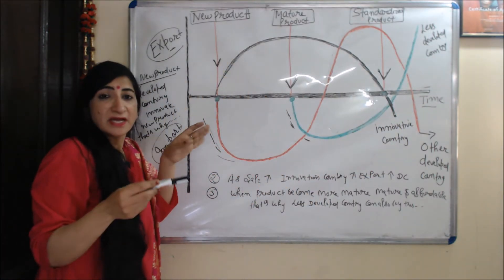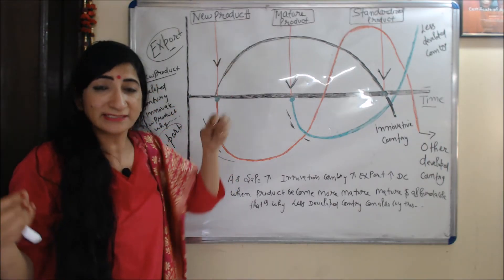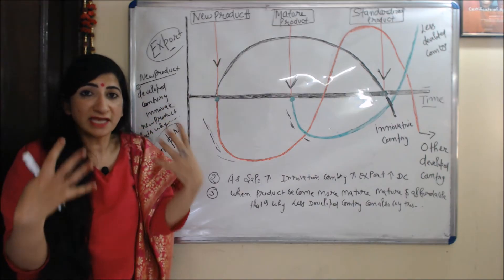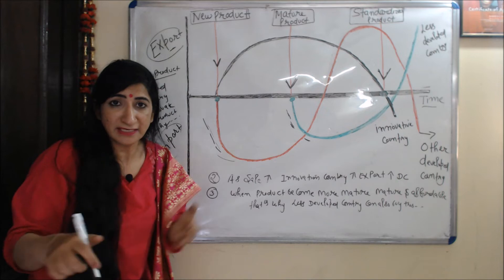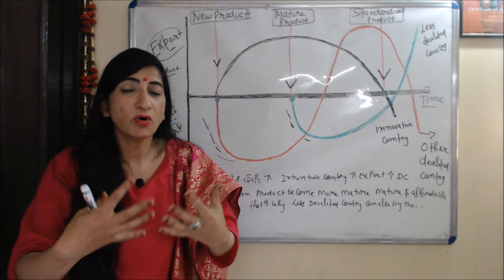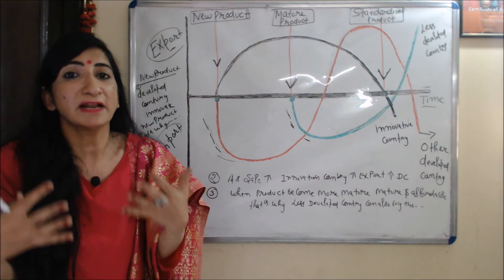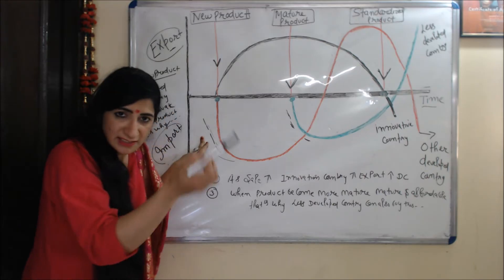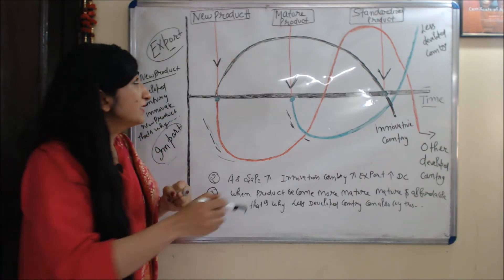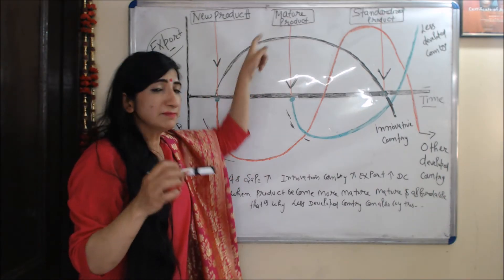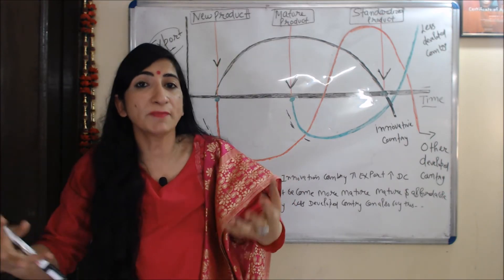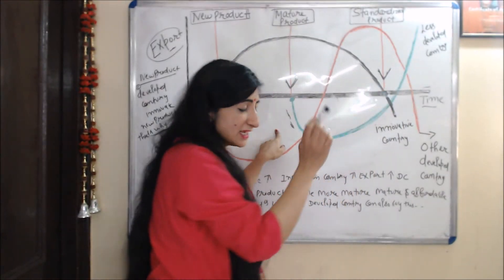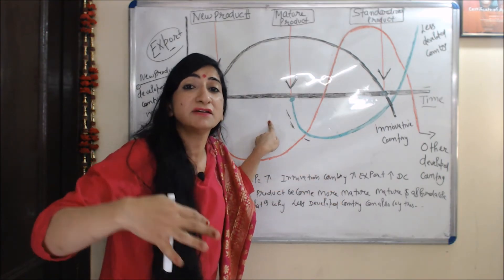Initially in the new product stage, the developed country innovates the product — that's why this country is called the innovative country. When sales of the product increase, the innovative country starts exporting to other developed countries. You can see the red curve representing other developed countries, where imports are increasing because the innovative country is exporting there. When the product becomes more mature and affordable in the second stage, even less developed countries can buy it, so other developed countries start doing export to less developed countries. The green diagram represents less developed countries — you can see their imports are continually increasing.